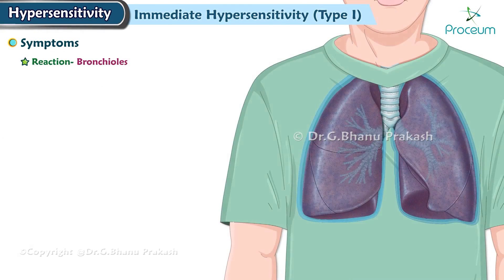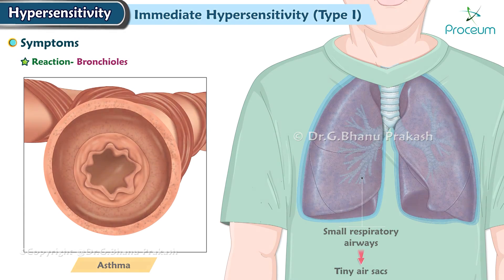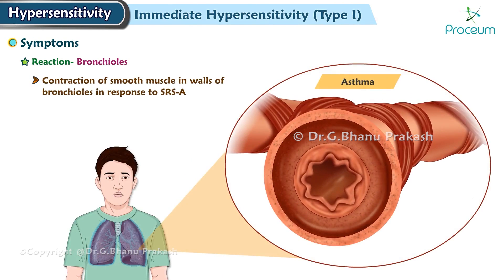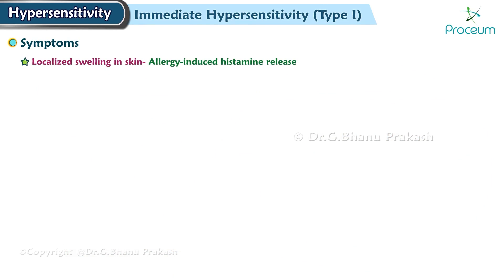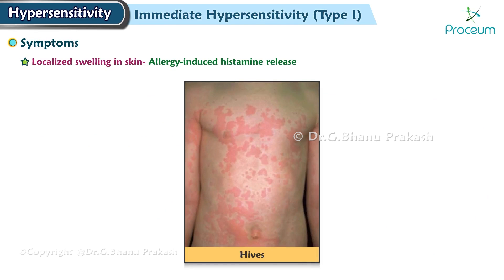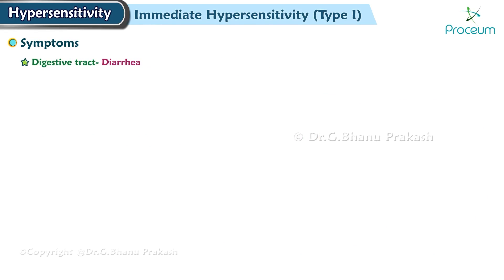If the reaction is concentrated primarily within the bronchioles, which are the small respiratory airways that lead to the tiny air sacs within the lungs, asthma results. Contraction of the smooth muscle in the walls of the bronchioles in response to SRSA narrows or constricts these passageways, making breathing difficult. Localized swelling in the skin because of allergy-induced histamine release causes hives. An allergic reaction in the digestive tract in response to an ingested allergen can lead to diarrhea.